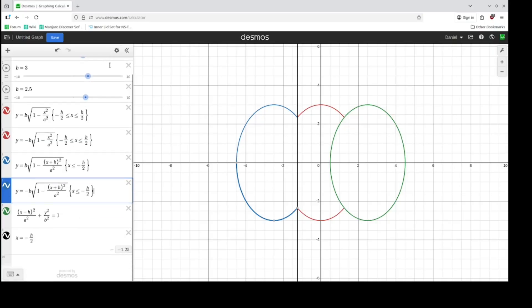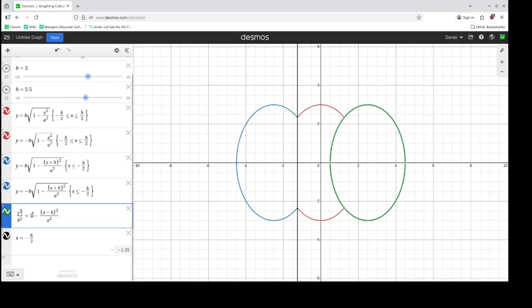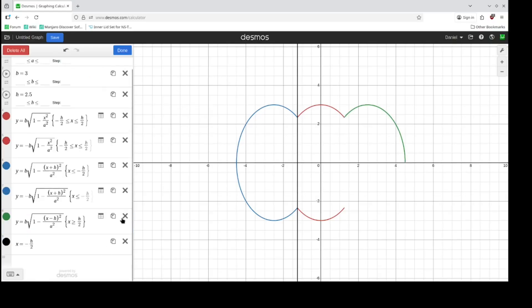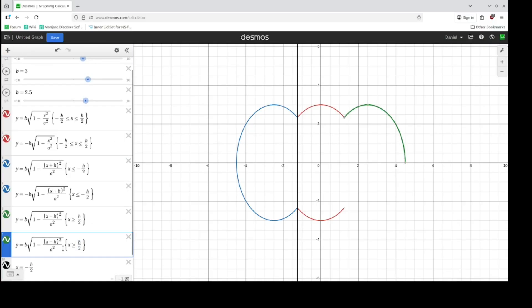We do the same thing for the green ellipse. So you subtract the whole x term over, you take the square root of both sides, multiply b. This is our top half. We know that this is going to be greater than or equal to h over 2. Duplicate it. This is our bottom half.